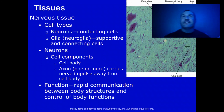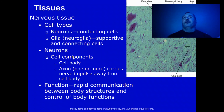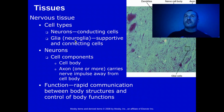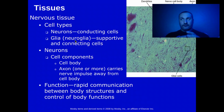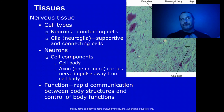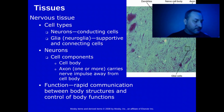Wrapping up with nervous tissue: there are many types of nerve tissue. The impulse-carrying components are the dendrite, cell body, and axon. Glial cells provide structural support — examples include astrocytes and oligodendrocytes. The function of the nervous system is communication, integration, and control.